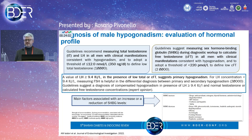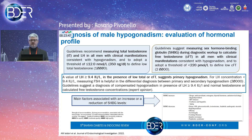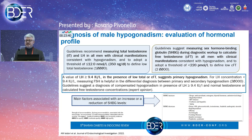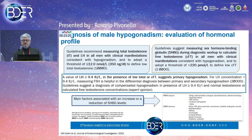Moving to diagnosis — it's not very difficult but requires some attention. The guidelines today recommend measuring total testosterone and LH in all men with clinical manifestations consistent with hypogonadism, and to consider the threshold of 12 nanomoles per liter. The same guidelines also suggest measuring sex hormone binding globulin, since it can be increased or decreased in different clinical conditions and can alter total testosterone levels. That's why we can calculate free testosterone levels, for which we consider a threshold of 220 picomoles per liter.